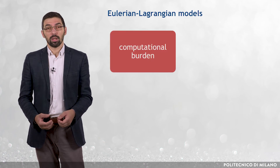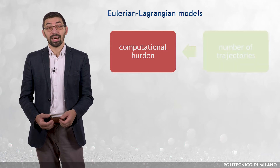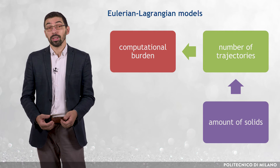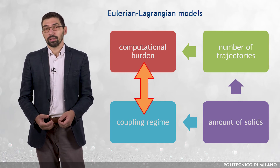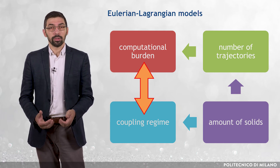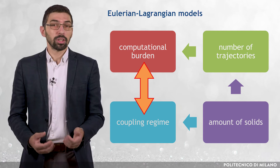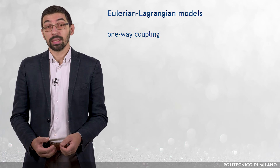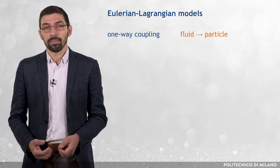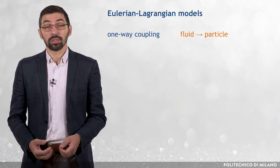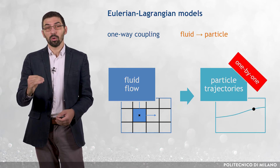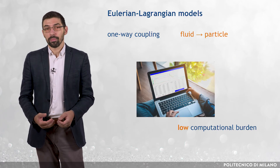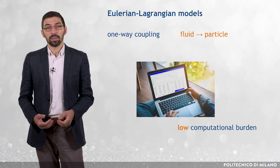It is quite intuitive that, being based on the tracking of individual particle trajectories, the computational burden of Eulerian-Lagrangian models is strongly affected by the number of calculated trajectories, and therefore on the amount of solids in the flow. An important role is played by the coupling regime, which dictates the procedure to solve the Eulerian-Lagrangian equations. If the solid concentration is very low, then one-way coupling regime takes place, in which the fluid flow field is not affected by the particles. This implies that the Eulerian-Lagrangian equations are solved sequentially: the fluid flow field is solved first, and then the particle trajectories are calculated one by one. The computational burden of these simulations is generally low, and it increases proportionally to the number of computational particles.